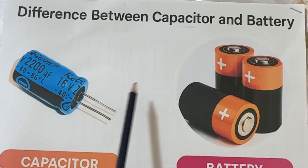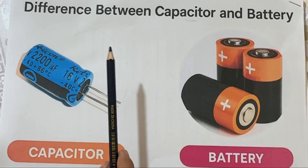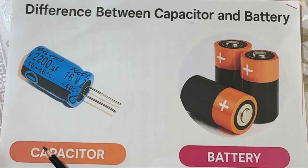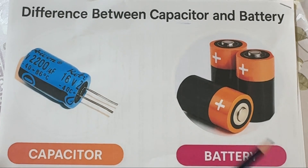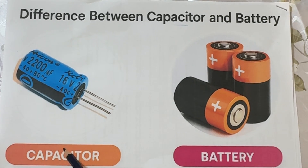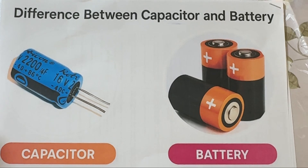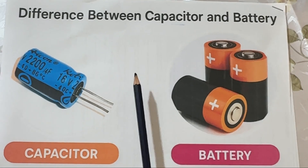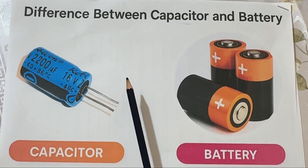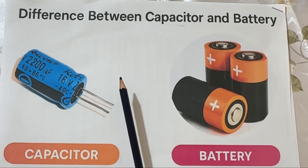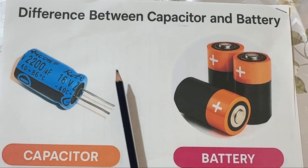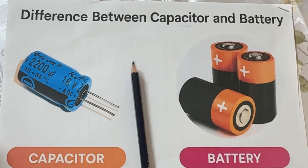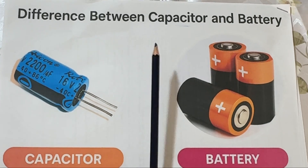Final thoughts: batteries provide long-term energy storage through chemical reactions, while capacitors provide instant power delivery through electric fields. They complement each other beautifully — batteries keep systems running while capacitors handle high-speed energy fluctuations. Thanks for watching! If you enjoyed this explanation, please like, share, and subscribe to Engineering Reference for more detailed comparisons in electrical and power systems. Which topic would you like next — perhaps supercapacitor versus battery, or inductor versus capacitor? See you in the next one!